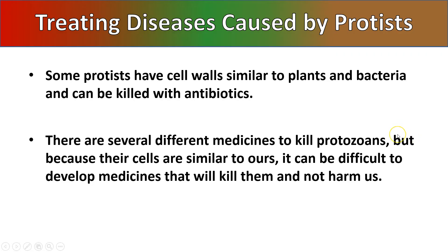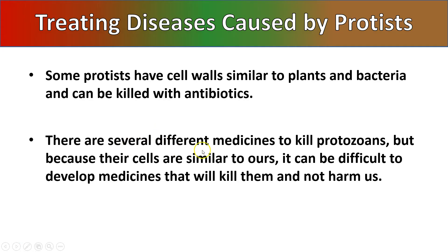Finally, treating diseases caused by protists: interestingly, some protists have a cell wall similar to plant cell walls, and just like some bacteria with similar cell walls, some of them can be killed with antibiotics. There are also several different medicines that can kill protozoans. Because they are animal-like, their cell structures are very similar to our own cell structures, so it can be very difficult to develop new medicines that will kill them without harming human cells.